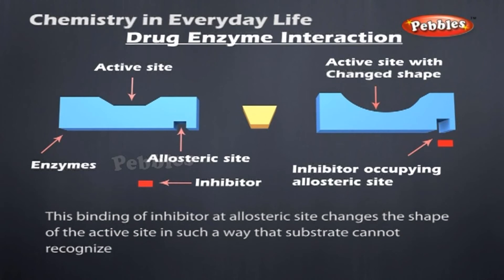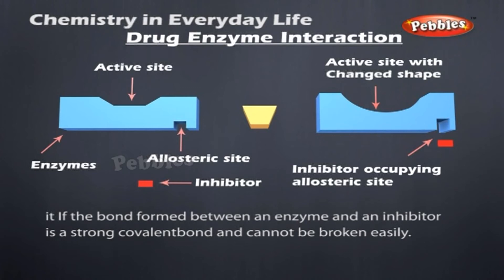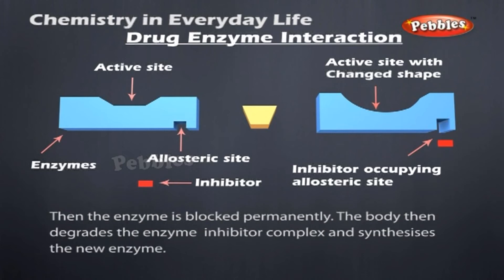This binding of inhibitor at the allosteric site changes the shape of the active site in such a way that the substrate cannot recognize it. If the bond formed between an enzyme and inhibitor is a strong covalent bond and cannot be broken easily, then the enzyme is blocked permanently. The body then degrades the enzyme-inhibitor complex and synthesizes the new enzyme.